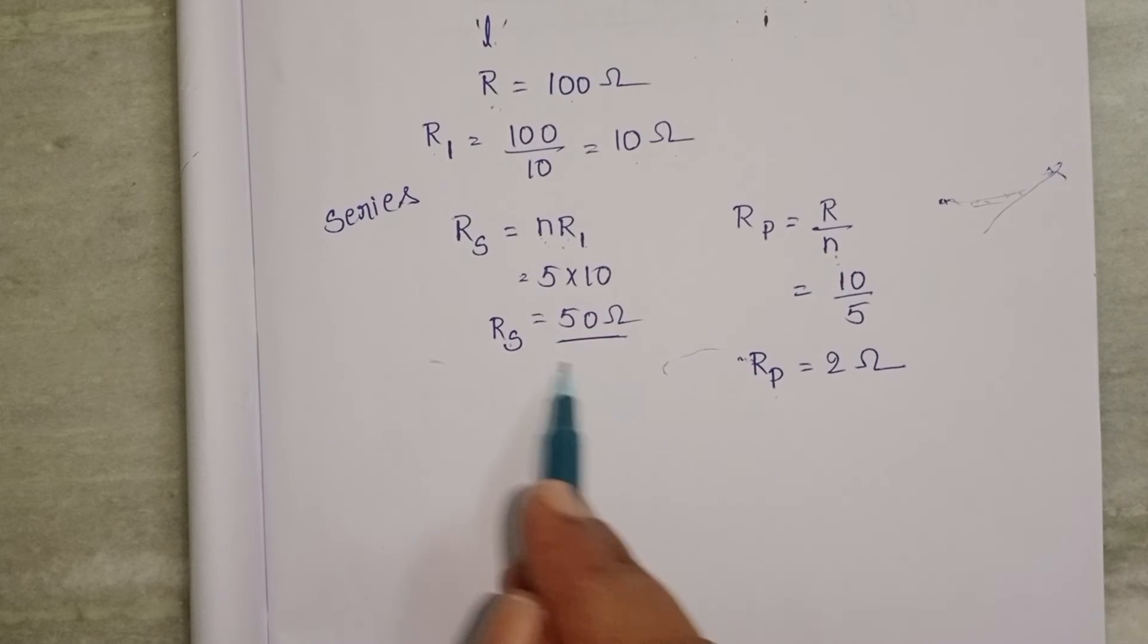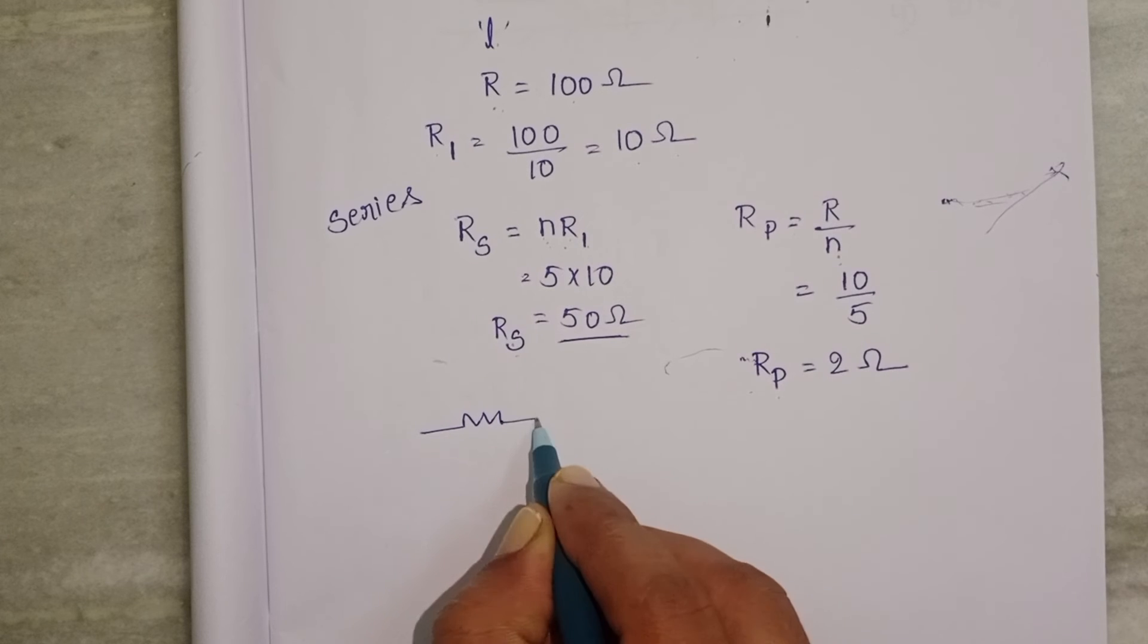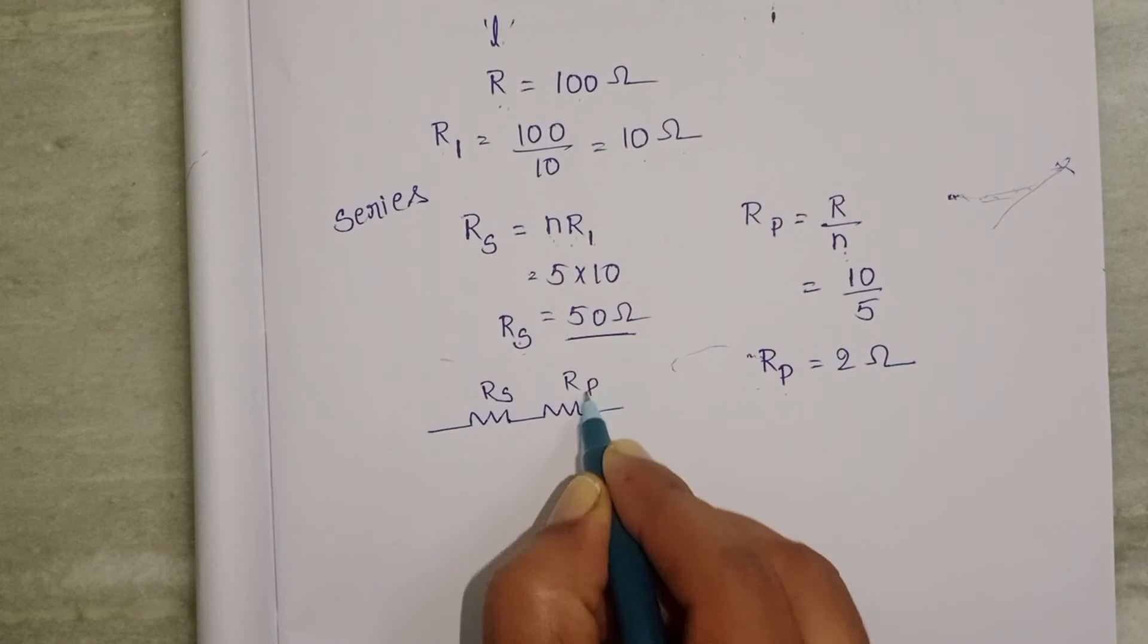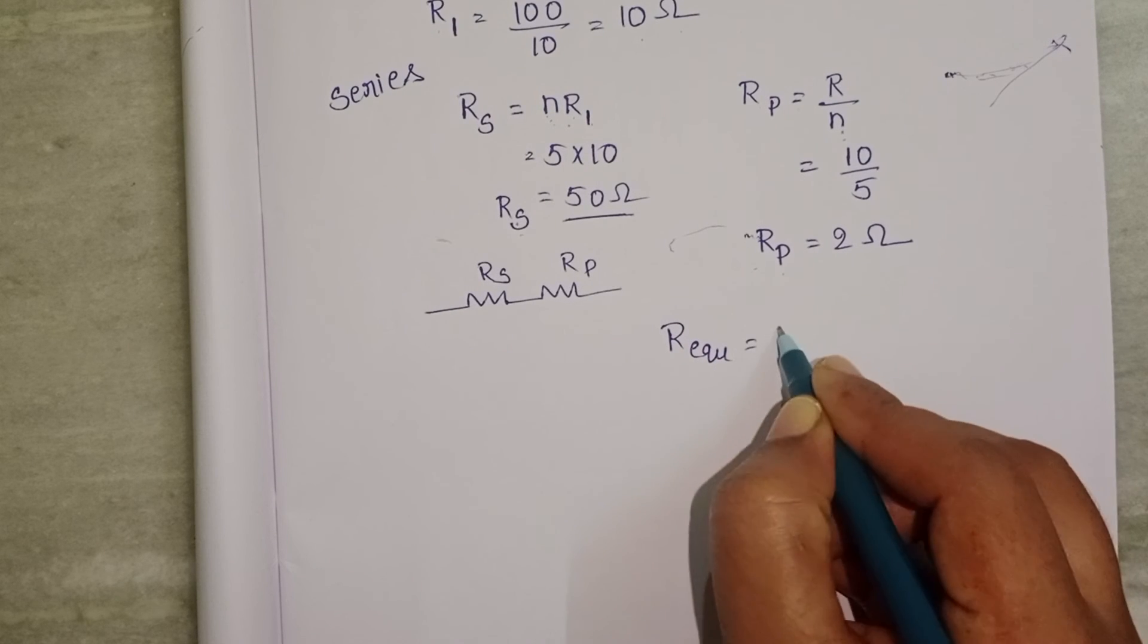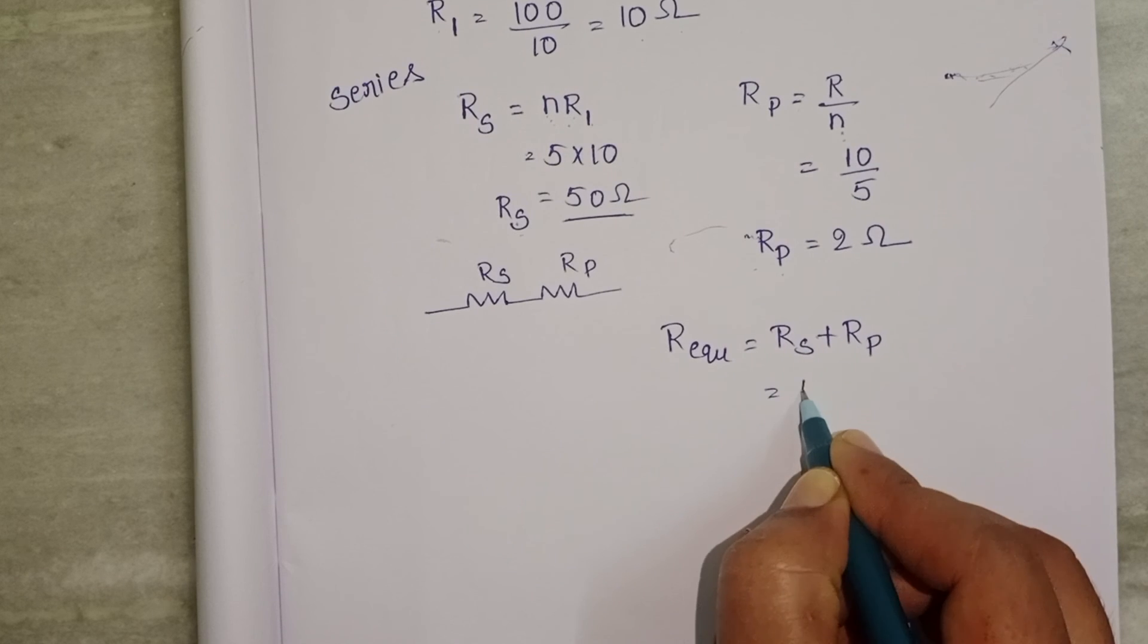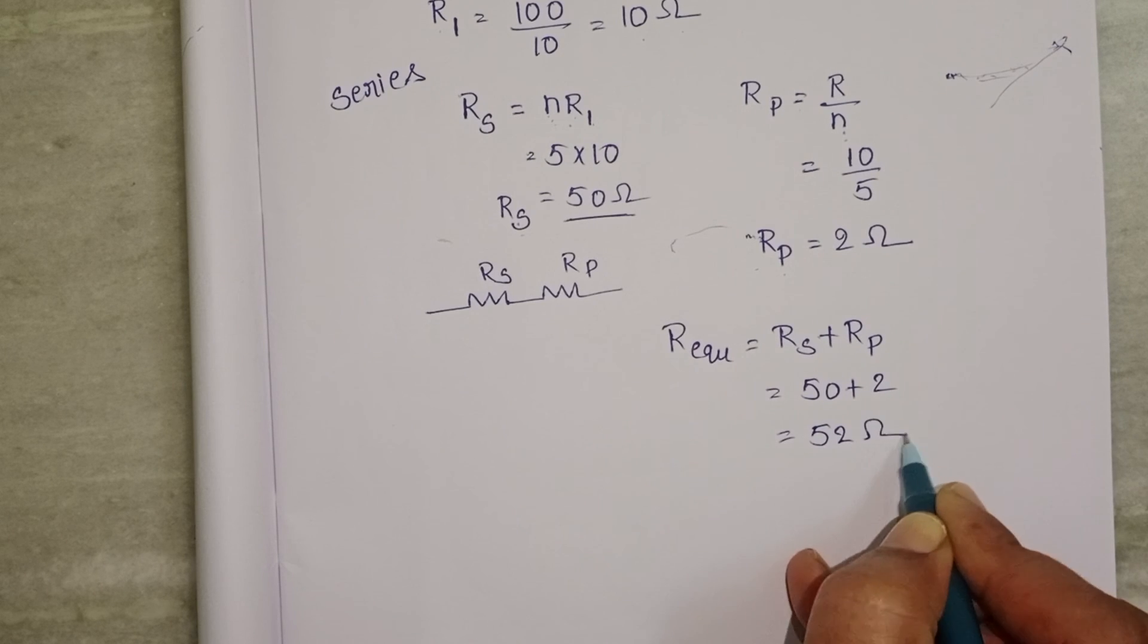Again, these two resistors are connected in series. The final equivalent resistance equals Rs plus Rp: 50 plus 2 equals 52 ohm. Second option is correct.